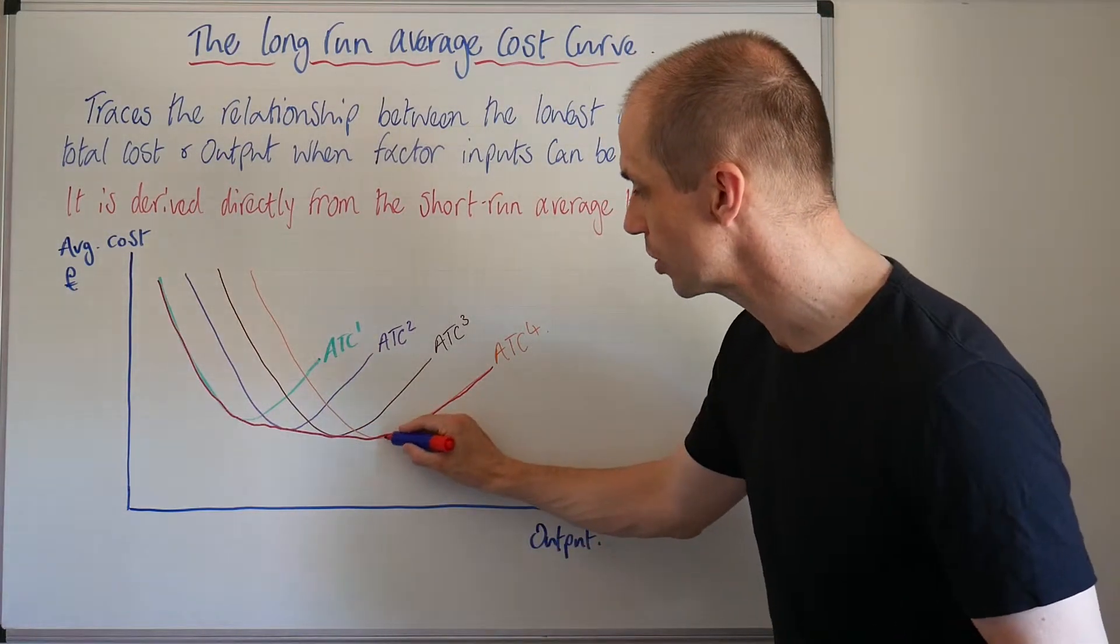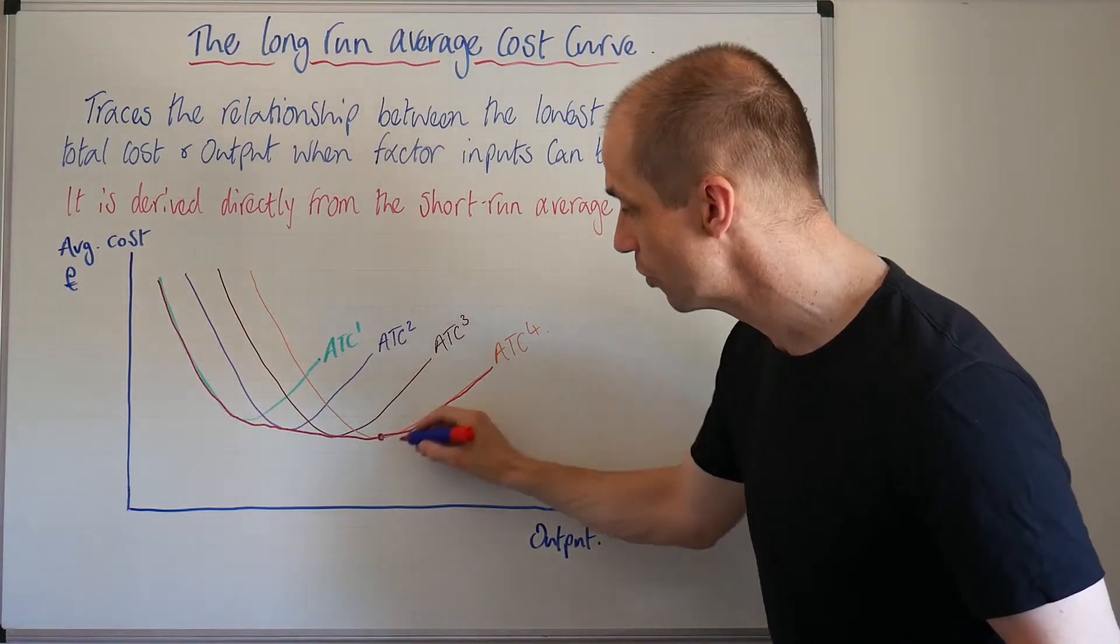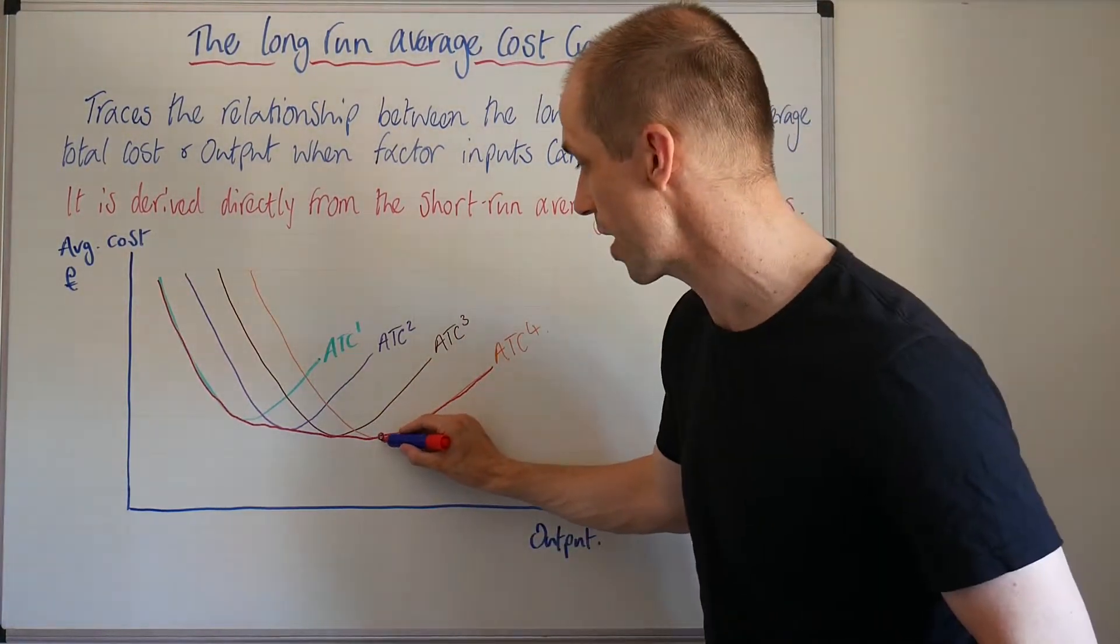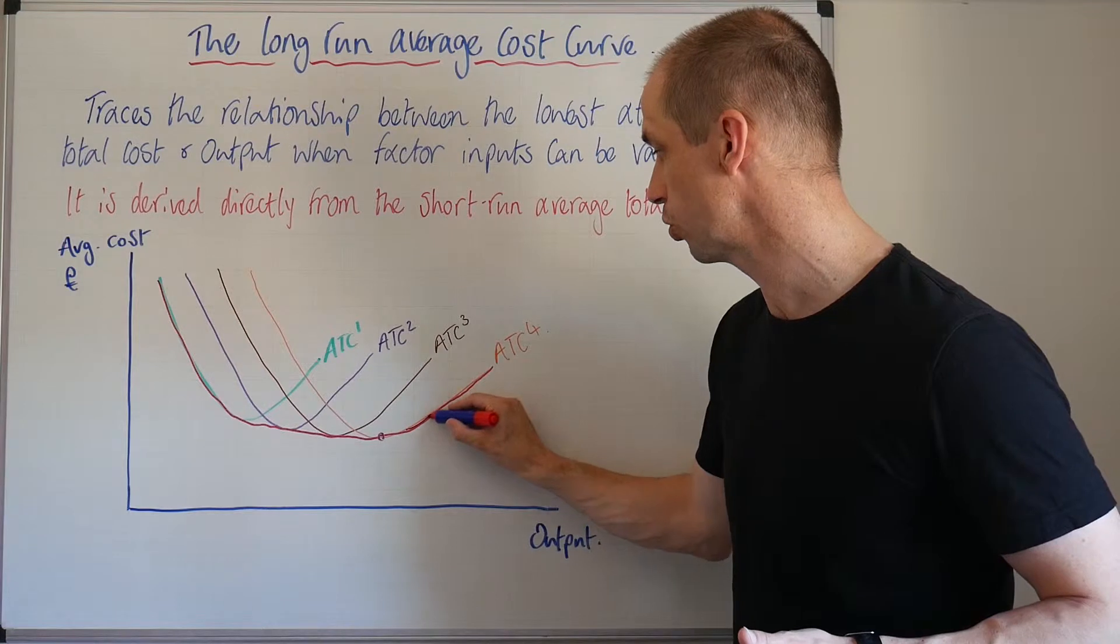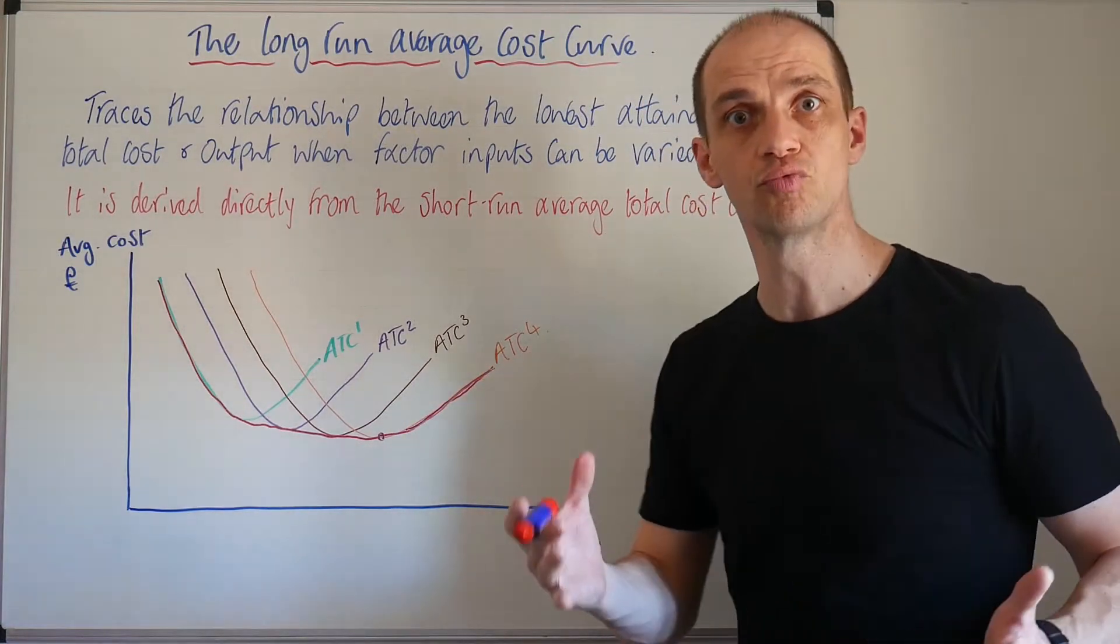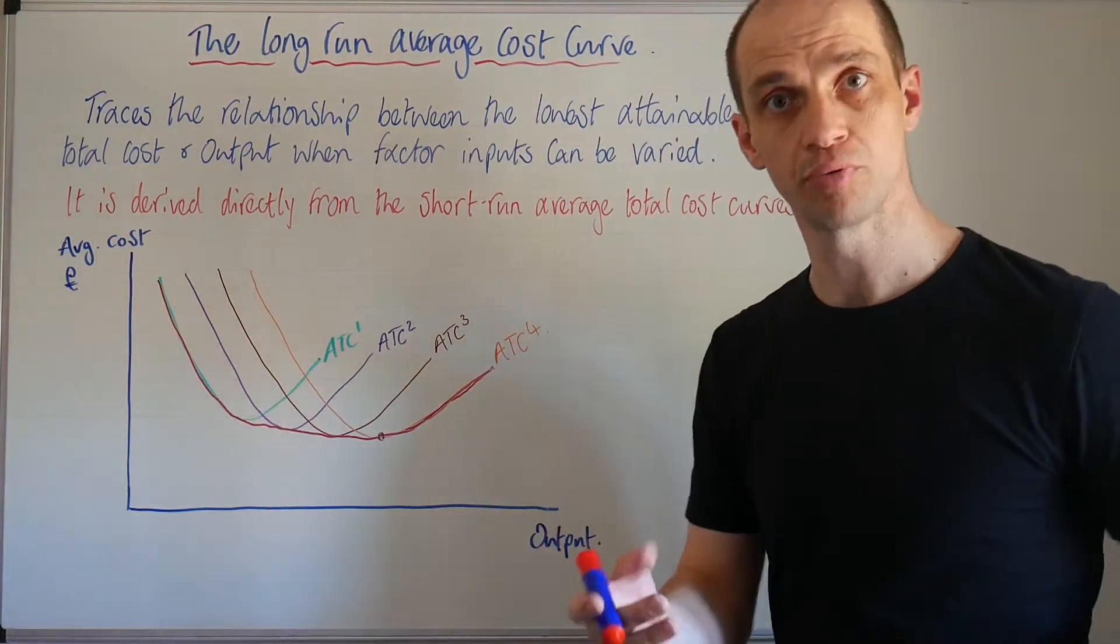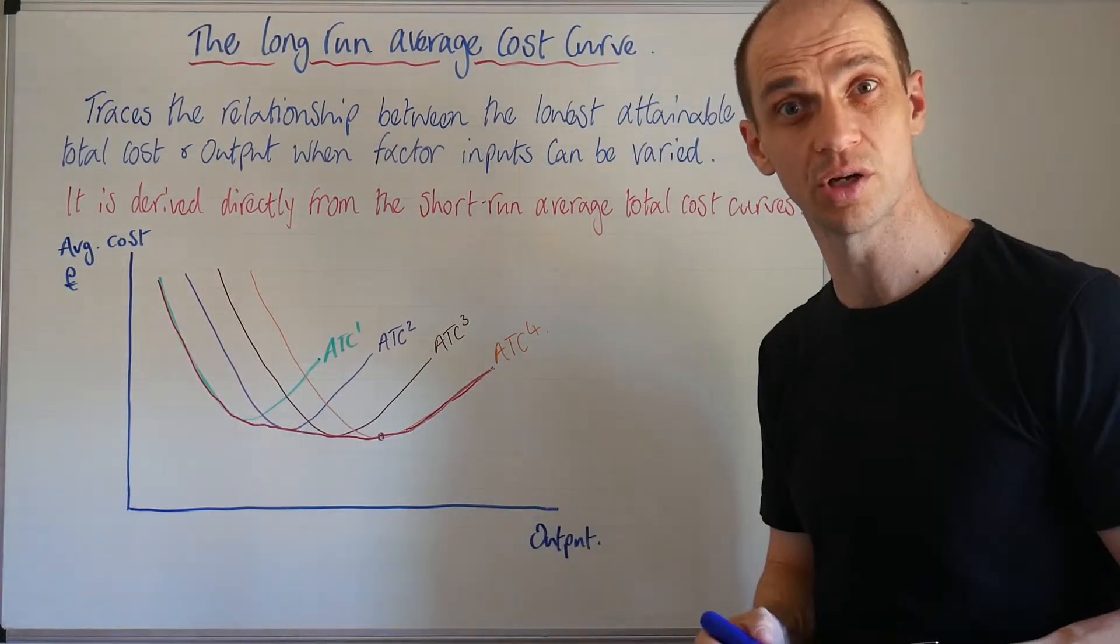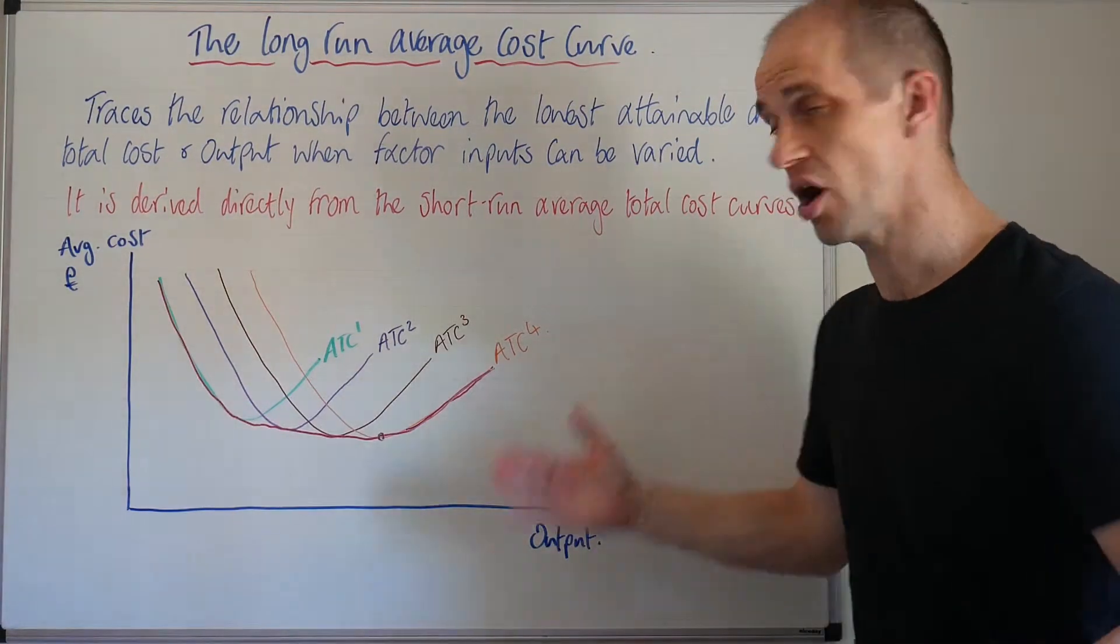And by doing so we can see that we attain a lowest cost point of production around about here. And then of course the average total cost curve begins to rise as the cost of producing additional outputs experiences decreasing returns to scale.